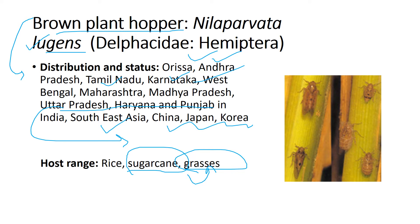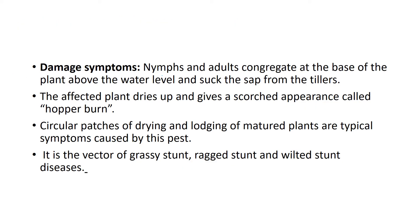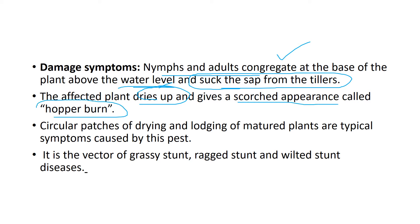The damage symptoms: nymphs and adults congregate at the base of the plant above the water level and suck the sap from the tillers. They suck out all the water content present in the plant, so the affected plant gets dried up eventually, giving a scorched appearance called hopper burn. Circular patches of drying and lodging of matured plants are typical symptoms caused by this pest.